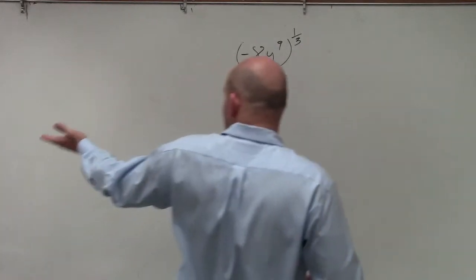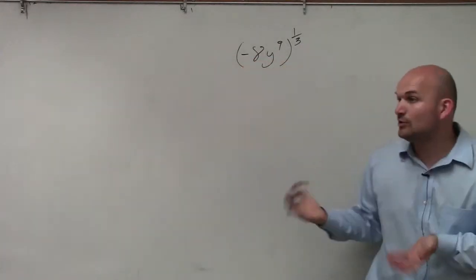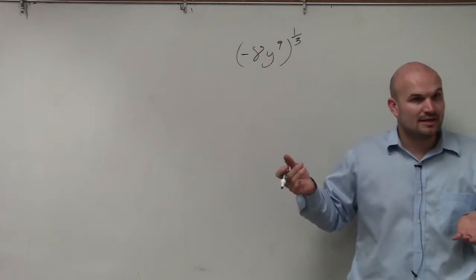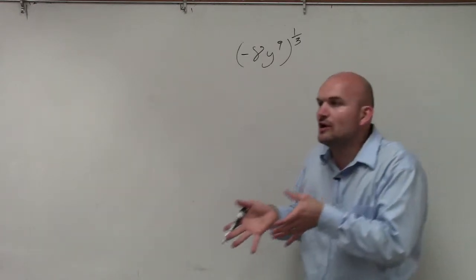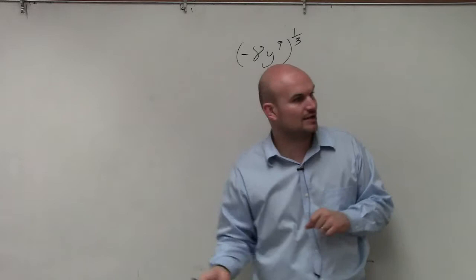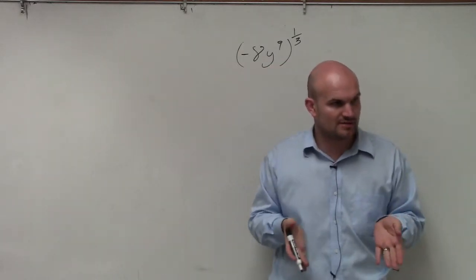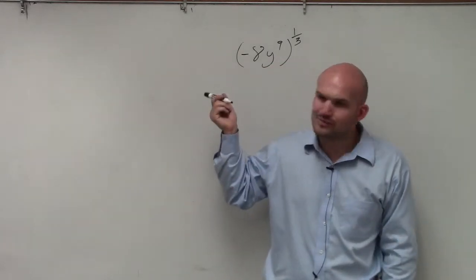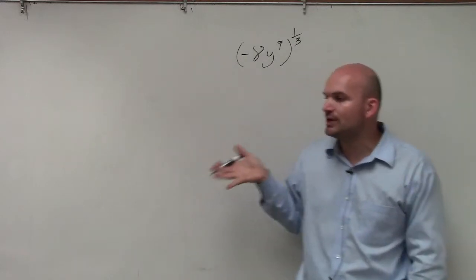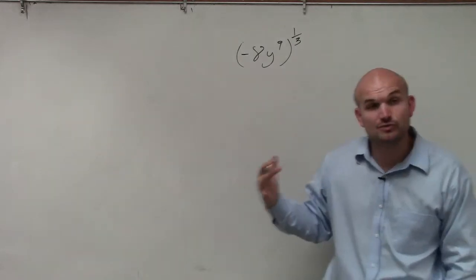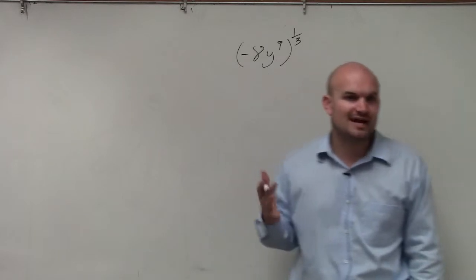So the main important thing, the last thing for number four was rational exponents. The only thing different with rational exponents is you're just going to need to know how to rewrite rational exponents as radical expressions, which we've talked about in our notes. But when we're simplifying problems with rational exponents, you're just going to want to use your rules of exponents. So make sure you know all of your rules of exponents.